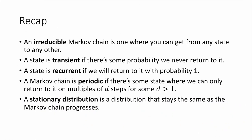To recap, we saw a lot of definitions. An irreducible Markov chain is one where you can get from any state to any other state. A state is transient if there's some probability we never return to it, and recurrent if we return to it with probability 1. A Markov chain is periodic if there's some state we can only return to on multiples of d steps for some d greater than 1. A stationary distribution is a distribution that stays the same as the Markov chain progresses. In the next video, we'll use these definitions to state and use the fundamental theorem of Markov chains. Thanks for watching.